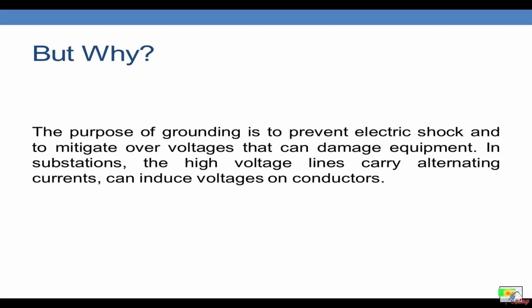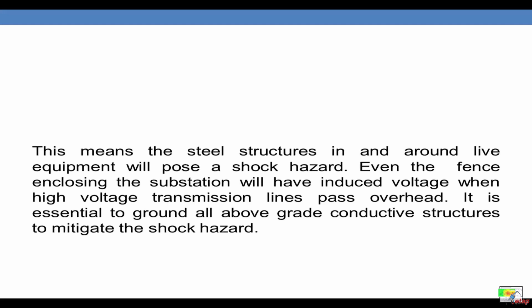Why we need earth grids or the earth matte? The purpose is to prevent electric shock and to mitigate overvoltages that can damage equipment. In substations, high voltage lines carry alternating currents which can induce voltages on conductors. This means that the steel structures in and around live equipment will pose a shock hazard. Even the fence enclosing the substation will have induced voltages when high voltage transmission lines pass overhead. So it is essential to ground all the above conductive structures to mitigate the shock hazard.